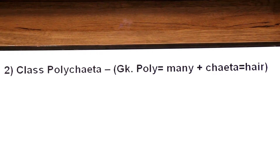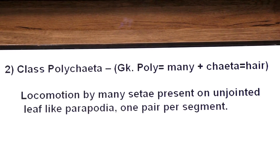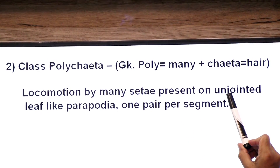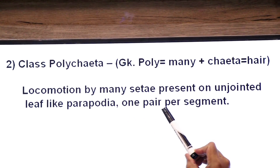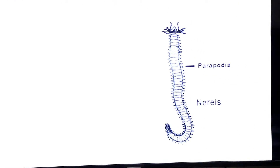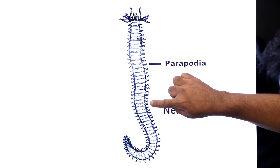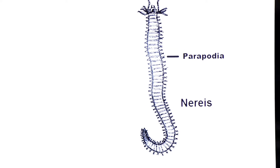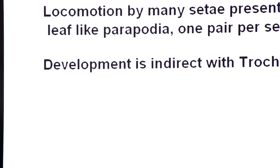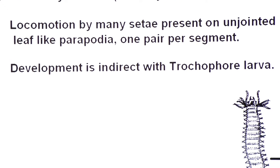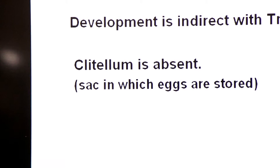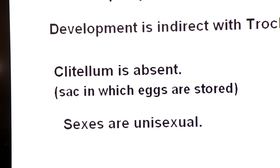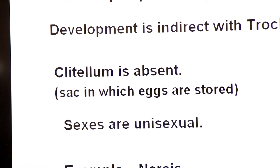Second class: Polychaeta — from Greek, 'poly' means many, 'chaeta' means hair-like structures. Locomotion is by many setae, which are present on unjointed leaf-like parapodia — one pair per segment. The lateral outgrowths called parapodia bear the setae, and their number is greater, which is why they are called polychaetes. Development is indirect — a larval stage is present, known as trochophore larva. Clitellum is absent in nereis. Sexes are unisexual — sexes are separated. Example: Nereis.